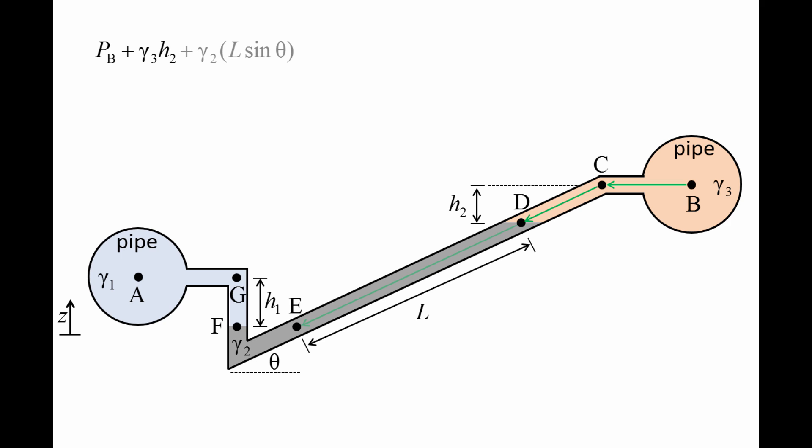As we travel from point D to point E, the pressure increases by gamma 2 times the vertical component of L, which is L times sine theta. We jump across to point F without a change in pressure because points E and F are at the same elevation.